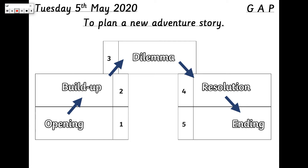Having a look here on the screen, we have got our story mountain. Our mountain goes up to the top and then starts to come back down the other side. We start with our opening, which tells us a little bit about the start of the story. We move to the build-up, then we have a dilemma or a problem — something the characters have got to solve. Then we come down the other side with a resolution, where we solve the problem, and finally a really good ending.